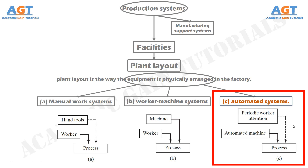Figure C depicts a fully automated system, while the semi-automated system is best portrayed by Figure B. In certain fully automated processes, one or more workers are required to continuously monitor the operation to ensure it performs to intended specifications — examples include complex chemical processes, oil refineries, and nuclear power plants. These workers do not actively participate except to make occasional adjustments, perform periodic maintenance, and respond if something goes wrong.